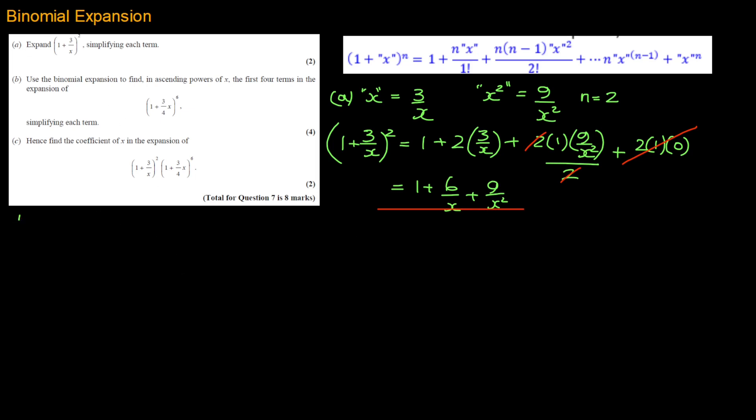Now in part B, we've got to find the first four terms of this expression. We've got n is equal to 6, and we've got x is equal to 3x over 4. It may be easier to write it that way rather than 3 quarters x. And we've got to do this for the first four terms.